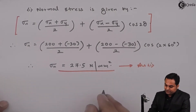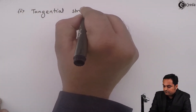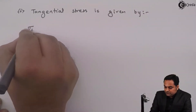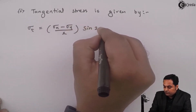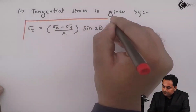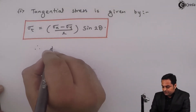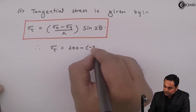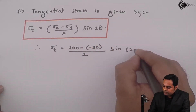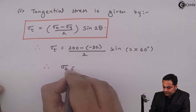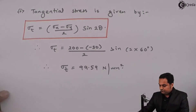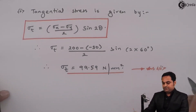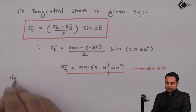After getting the normal stress, the tangential stress is given by the formula: sigma t = (sigma x − sigma y) / 2 · sin 2θ. Substituting sigma x = 200, sigma y = −30, and theta = 60 degrees, sigma t comes out to be 99.59 newton per mm square. This is the second answer.